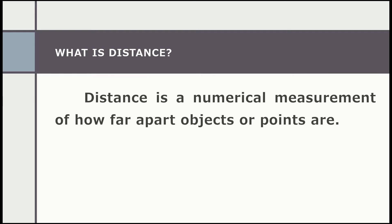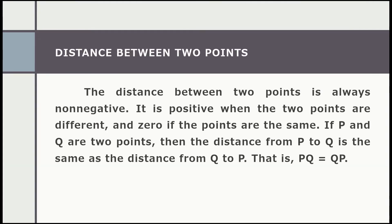In mathematics, a distance function or metric is a generalization of the concept of physical distance — a way of describing what it means for elements of some space to be close to or far away from each other. The distance between two points is always non-negative; there is no negative measurement. It is positive when the two points are different, and zero if the points are the same. If P and Q are two points, then the distance from P to Q is the same as the distance from Q to P. Therefore, PQ is equal to QP.